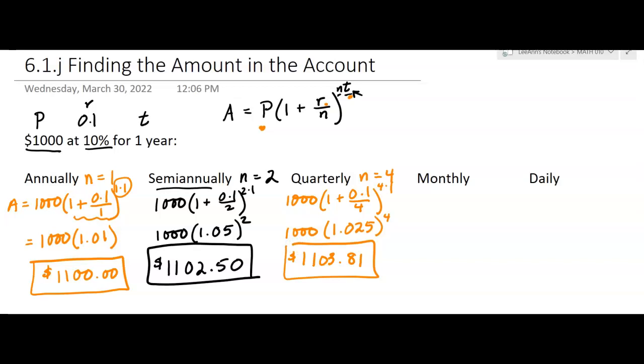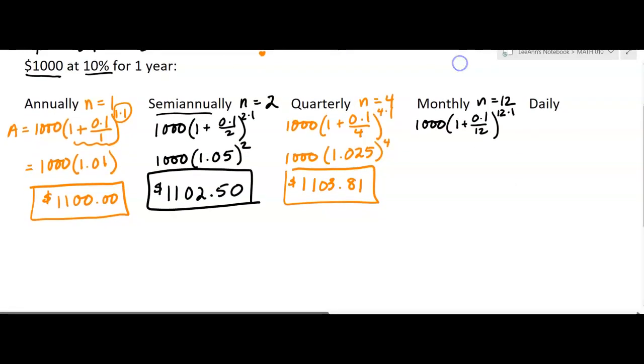Now we're going to go for monthly. Monthly means n is 12, because there's 12 months in a year. So we're going to be compounding it every month, or 12 times in the year. So it's going to be 1,000 times one plus 0.1 divided by 12, to the 12 times 1. We're still just doing one year. Now I'm going to put this in my calculator. Let me scroll down so you can see how to type this in.